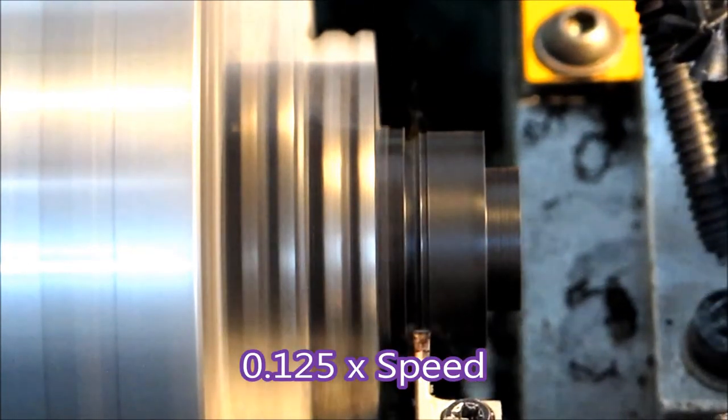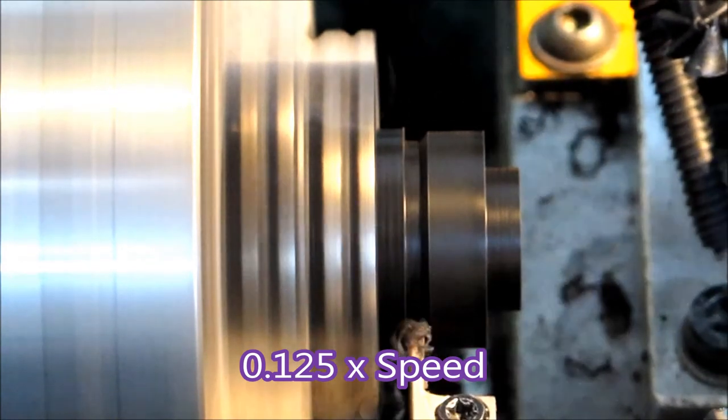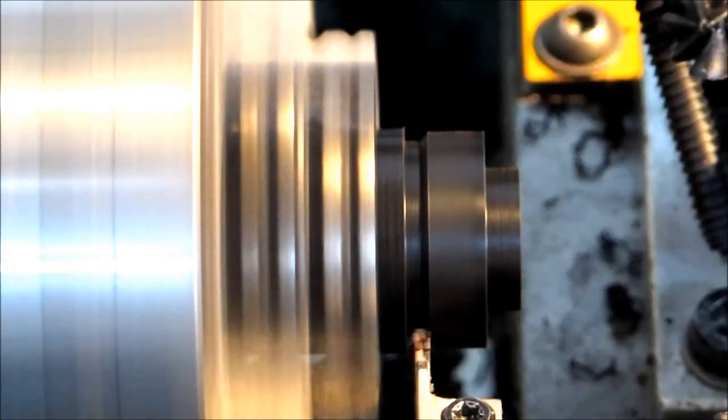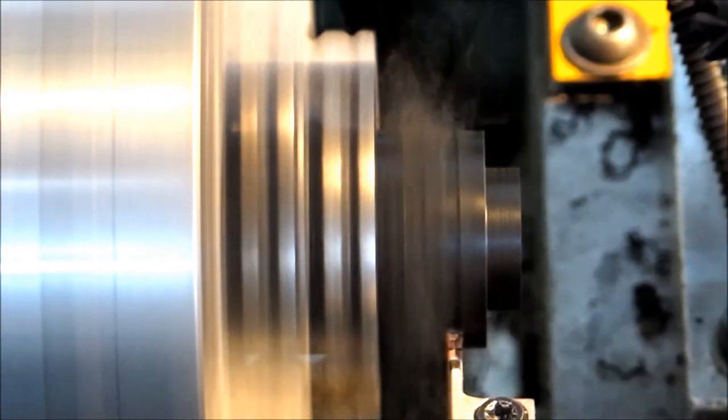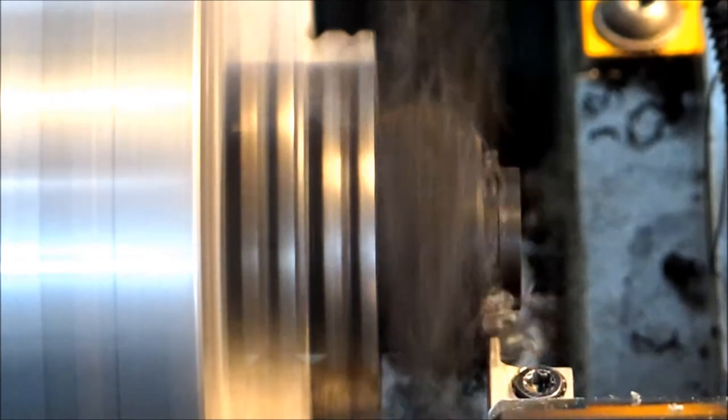Now the tool goes in and cuts the chamfer and then it follows the chamfer back out before starting the turning of the OD. That got rid of that white mark I was getting.